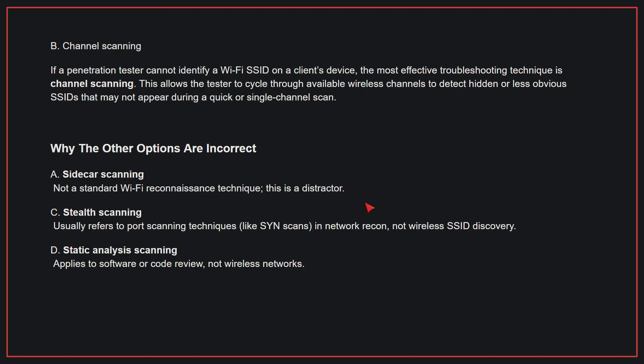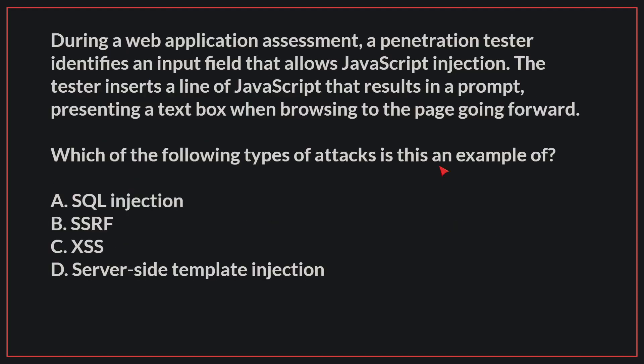Therefore, the correct answer is B. During a web application assessment, a penetration tester identifies an input field that allows JavaScript injection. The tester inserts a line of JavaScript that results in a prompt, presenting a text box when browsing to the page going forward. Which of the following types of attacks is this an example of?